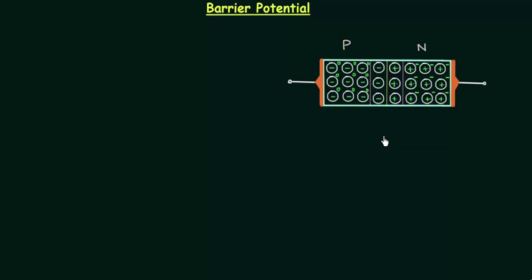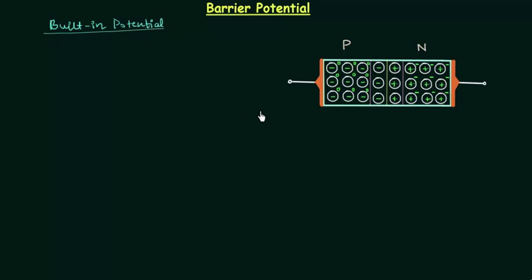In the last lecture we completed the p-n junction diode with no applied bias. I explained barrier potential, which is also called built-in potential. In the case of no applied bias, we do not apply any external voltage source across the two terminals, and because of diffusion we have a depletion layer.